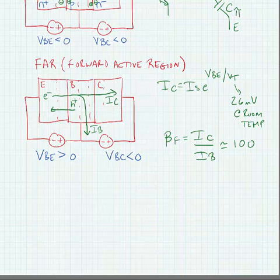We have another parameter called alpha. And alpha is equal to beta divided by 1 plus beta. And if beta is large, of course, this should be approximately equal to 1.